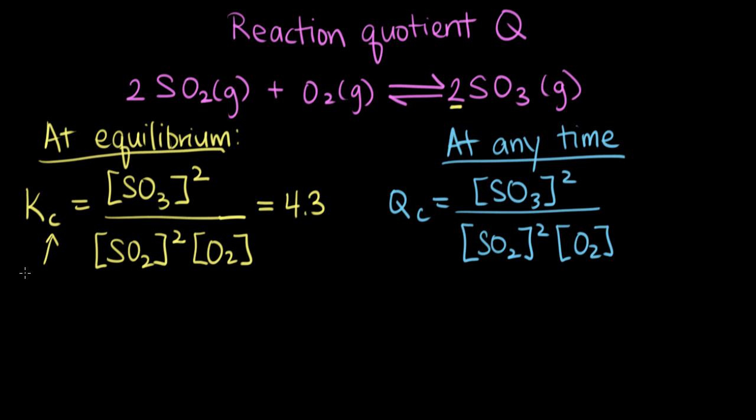So the C means everything is in terms of the molar concentration. And for the reaction quotient Q, again, everything is in terms of molar concentration, but we can calculate it with any concentrations and we don't have to be at equilibrium.